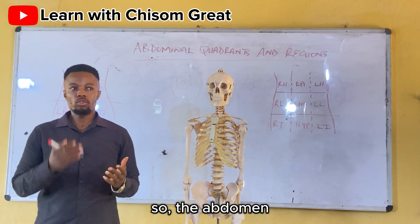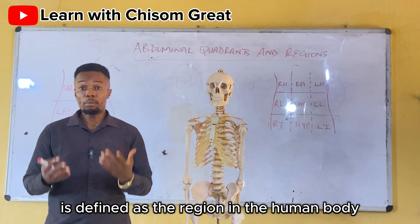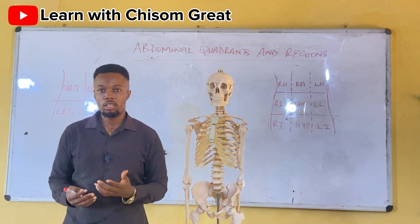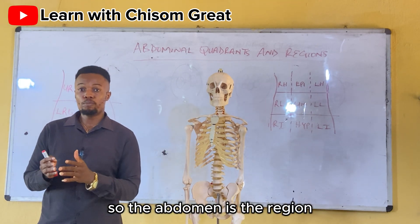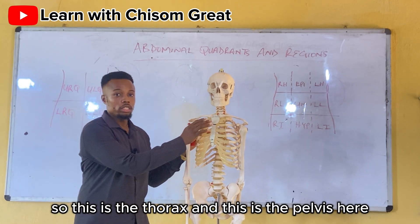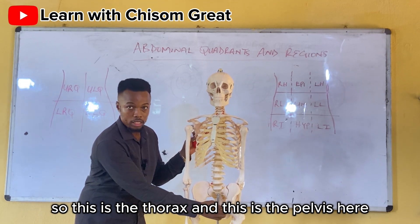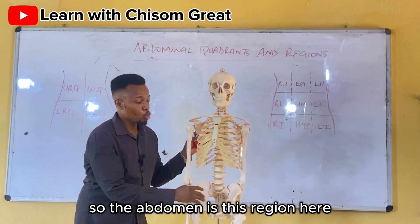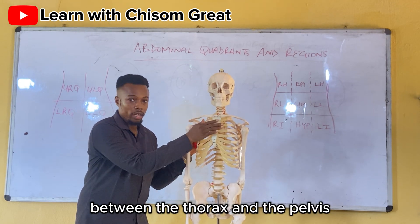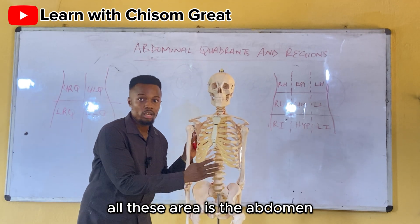The abdomen is defined as the region in the human body that is found between the thorax and the pelvis. This is the thorax and this is the pelvis here. So the abdomen is this region here between the thorax and the pelvis — all this area is the abdomen.